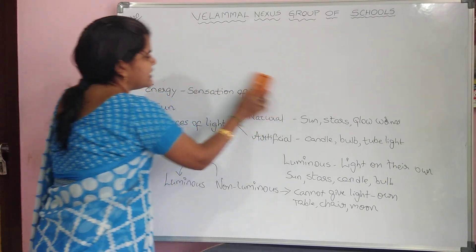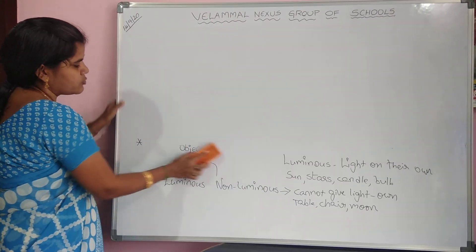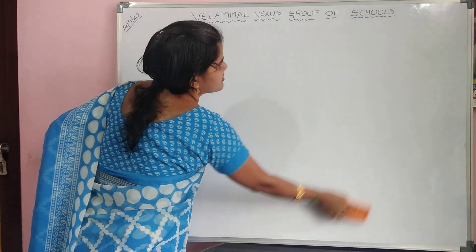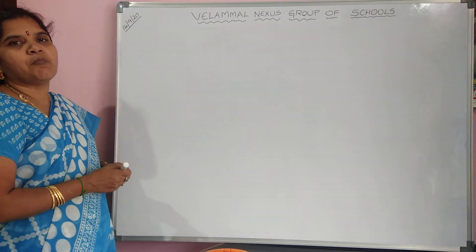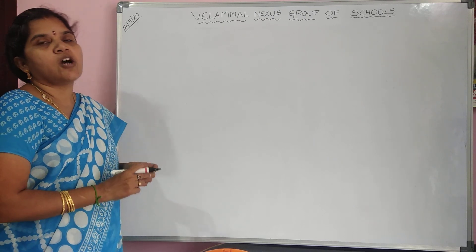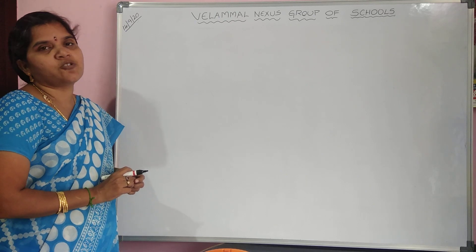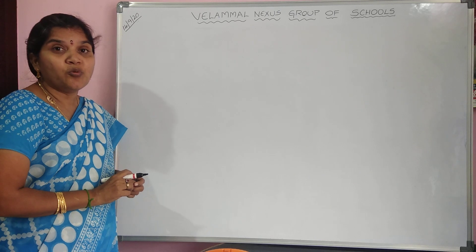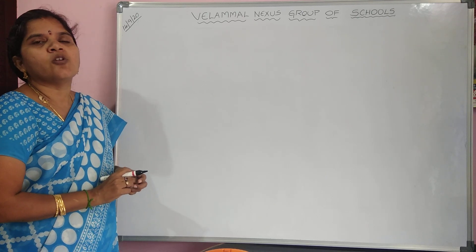To recap: light is a form of energy, an invisible energy which makes things visible. Sources of light are classified into natural sources and artificial sources. Natural sources give light on their own — sun, stars, glow worms. Artificial sources are man-made objects that give light — candle, tube light, bulb. Objects are also divided into luminous and non-luminous. Luminous examples: sun, stars, candle, bulb. Non-luminous examples: moon, planets, table, chair — objects we see only when light falls on them.